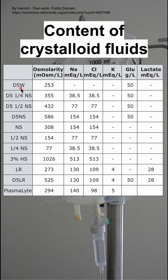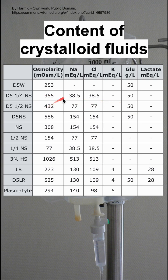Let's start with D5 water. This has a slightly hypotonic osmolality, and it's all glucose, as you can see. D5 half normal and D5 quarter normal have small variations where you have a little bit of salt in them, but mostly just sugar and sodium and chloride.